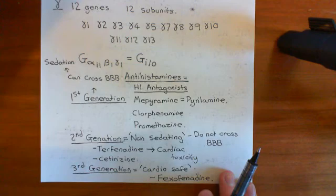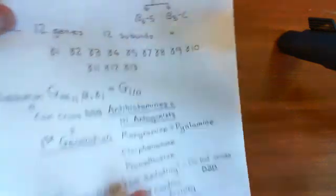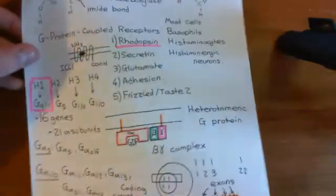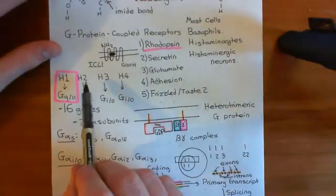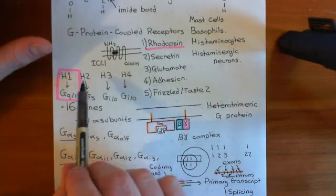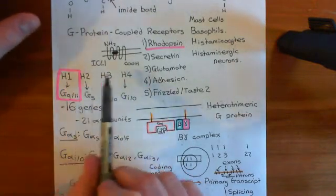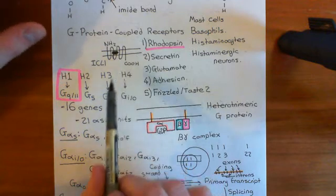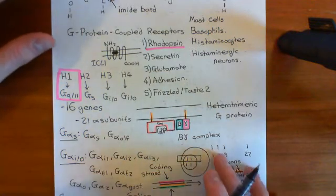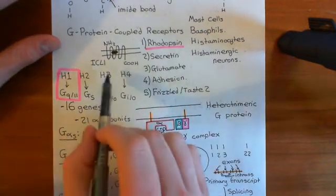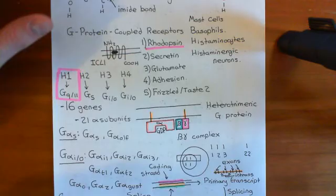Let's now talk about drugs which interact with the other histamine receptor types — H2 and H3. We won't talk about H4 because its pharmacology isn't well understood at all. So let's talk about H2 first.